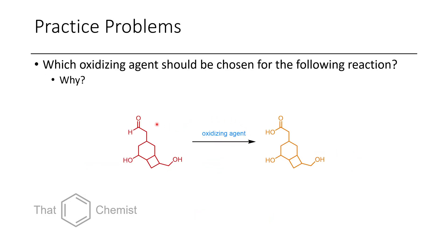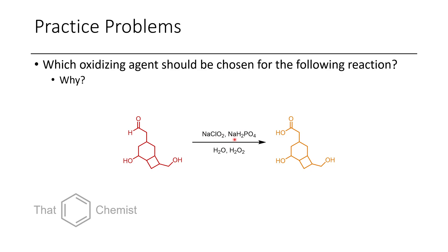In the next practice problem, we have an aldehyde as well as two different types of alcohols, and we treat it with some oxidizing agent, but we only want to oxidize the aldehyde to a carboxylic acid. Which oxidizing agent should we use? If we use sodium chlorite, which is the Pinnick reaction, we'll be able to selectively transform the aldehyde without touching any of the remaining alcohol groups. Jones' reagent would react at the secondary and the primary alcohol as well as the aldehyde, converting these to a carboxylic acid, a ketone, and another carboxylic acid, respectively.